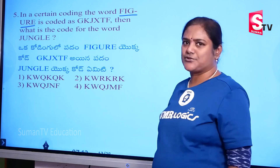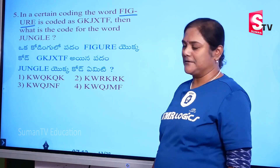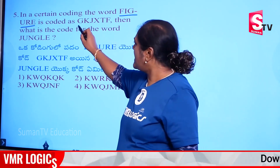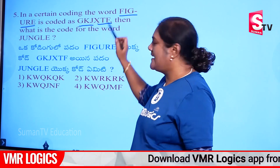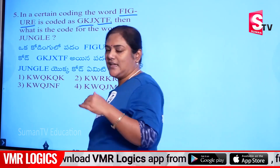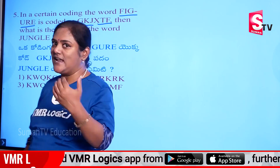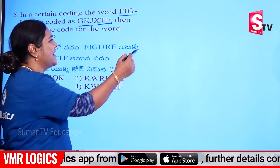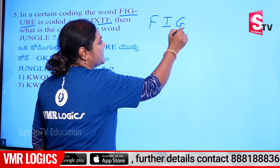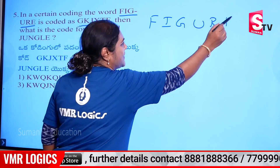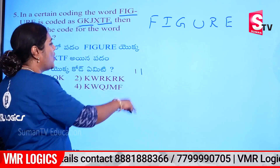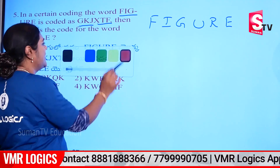Now, next model to the figure. The code is G, K, J, X, T, F. The code here is F, I, G, U, R, E. This is the code — A letters.